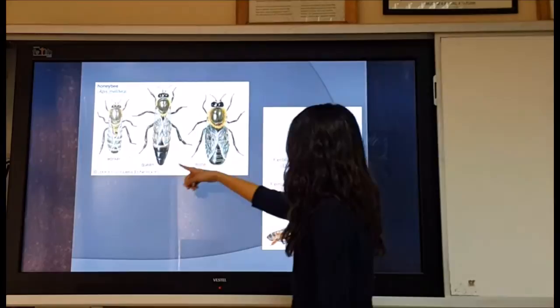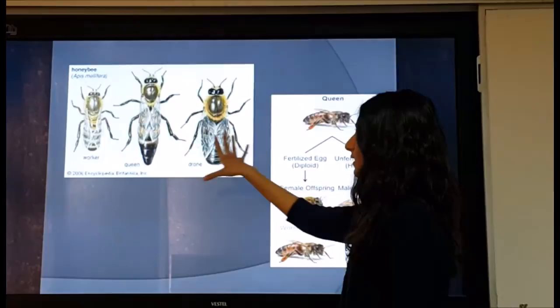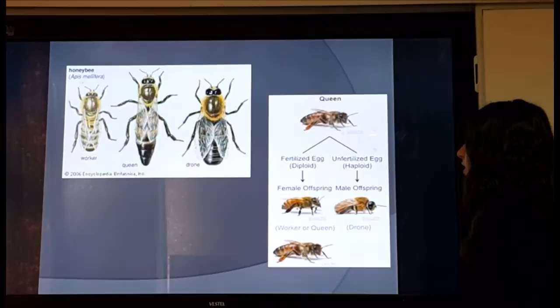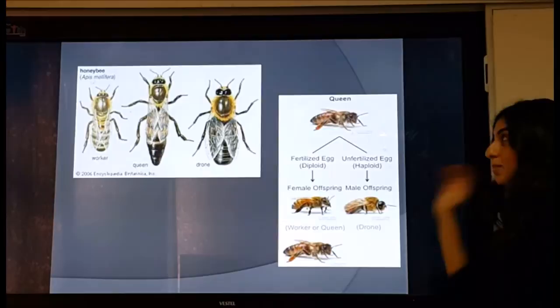Here are some pictures of bees: a worker bee, a queen bee, and a drone — the drone is male and the other two are females. They look slightly different from one another. In the diagram, the queen bee's fertilized egg is diploid and becomes female offspring, while her unfertilized egg is haploid and becomes male offspring — this is parthenogenesis.